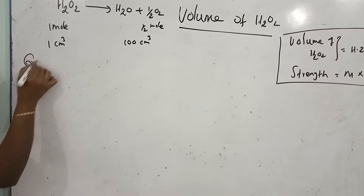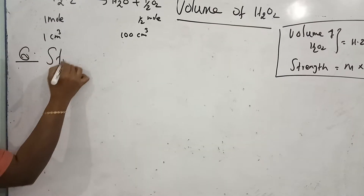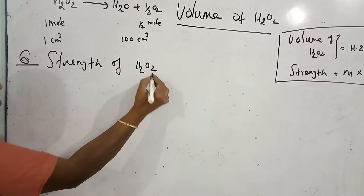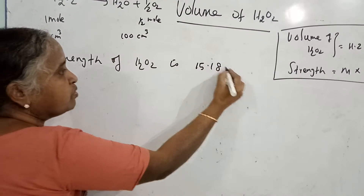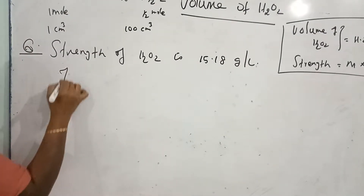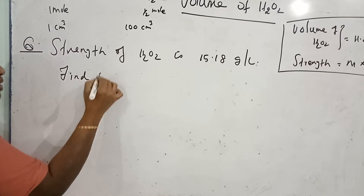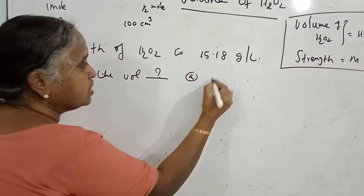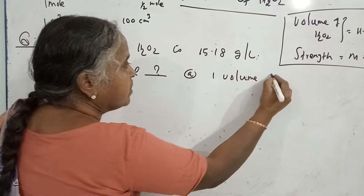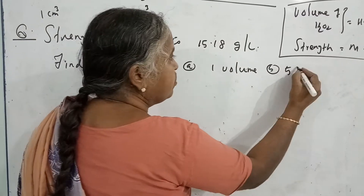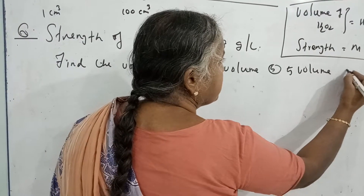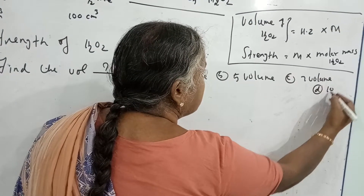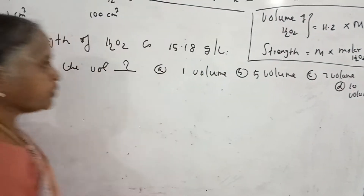Now let us see the question. The strength of hydrogen peroxide is 15.18 grams per liter. Find the volume. The options are: one volume, five volume, seven volume, and ten volume.